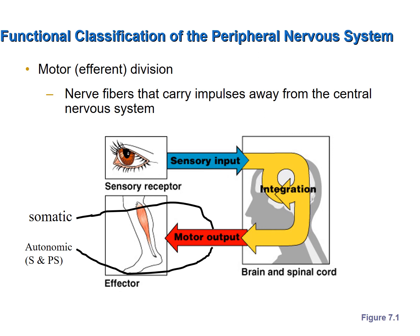Nerve fibers that send motor output out to effectors are part of the motor or efferent division. Like the sensory division, it is divided into two subdivisions. Nerve fibers sending motor output to skeletal muscles — effectors you have conscious control of — are part of the somatic motor division. Nerve fibers sending motor output to smooth muscle, cardiac muscle, and glands — effectors you have no conscious control of — are part of the autonomic motor division, which is later subdivided into sympathetic and parasympathetic.